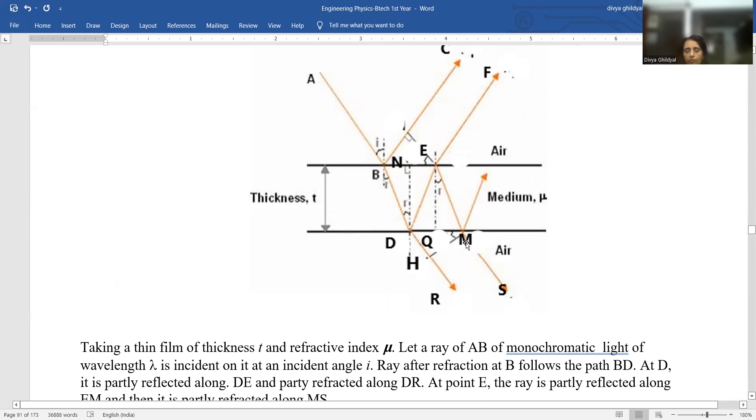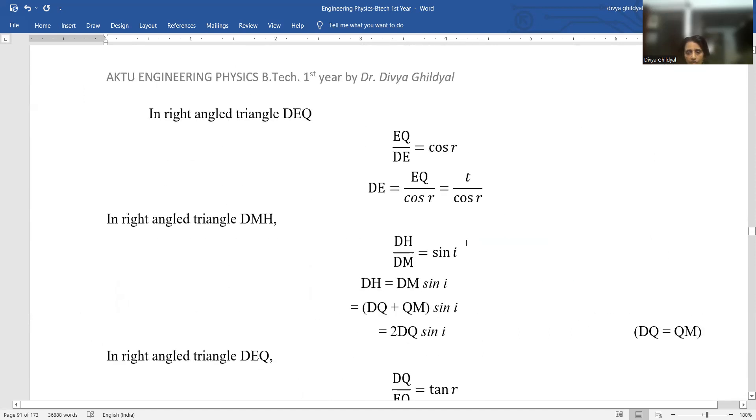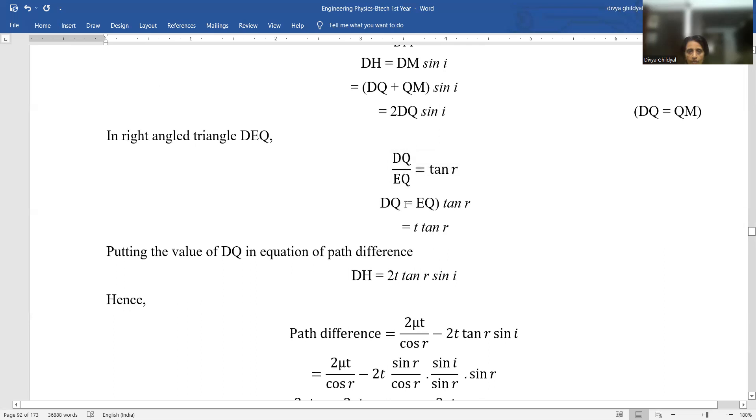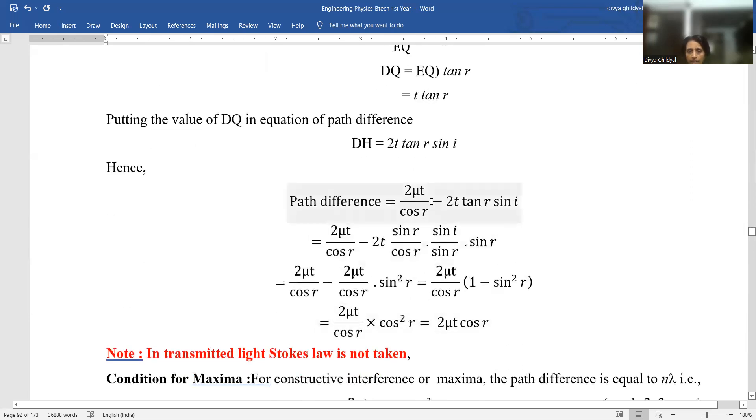Look here. EQ is thickness of this thin film T. This is a uniform thickness film. So everywhere it will obviously be T. So we get DQ equal to T tan R. Putting all these values in my expression above for path difference becomes equal to 2 T tan R sin I. So path difference.